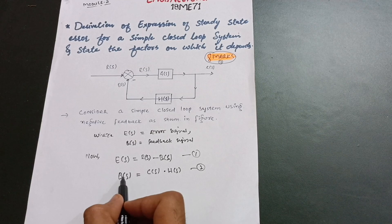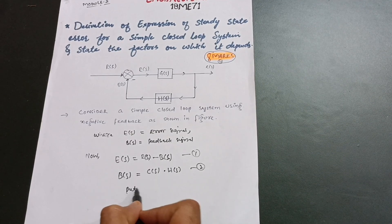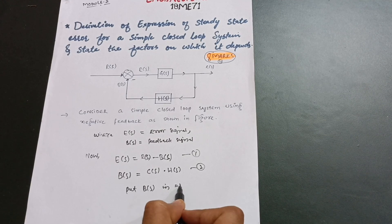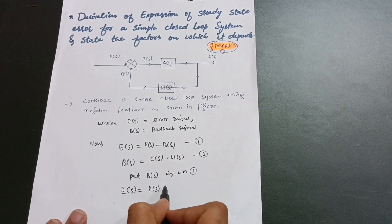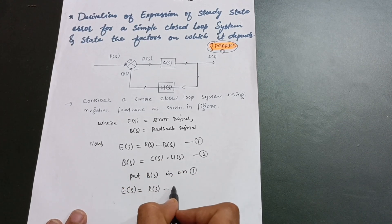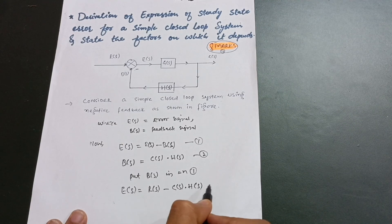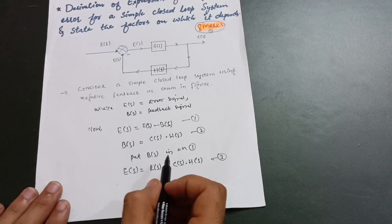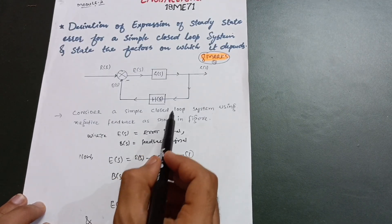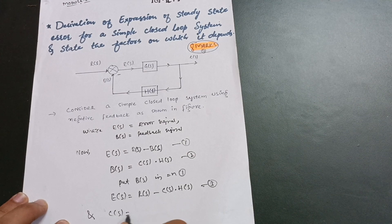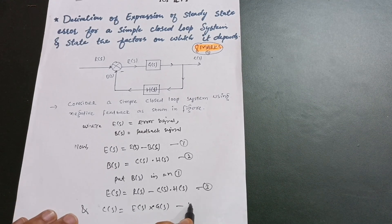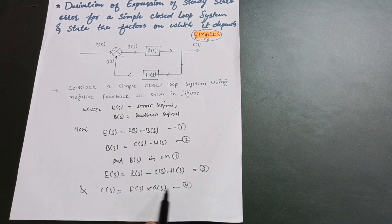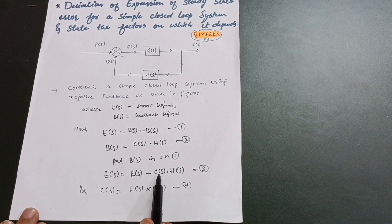Now I substitute the value of B(s) into the first equation. Putting B(s) into equation one, I get E(s) = R(s) − C(s)·H(s). This is the third equation. Also from the figure, C(s) = E(s)·G(s). This is the fourth equation. Now I will put the value of C(s) from equation four into equation three.